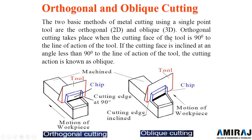Orthogonal cutting takes place when the cutting face of the tool is at 90 degrees to the line of action of the tool — the cutting edge is at 90 degrees and the chip is formed at exactly 90 degrees. If the cutting face is inclined at an angle less than 90 degrees to the line of action of the tool, the cutting action is known as oblique cutting.